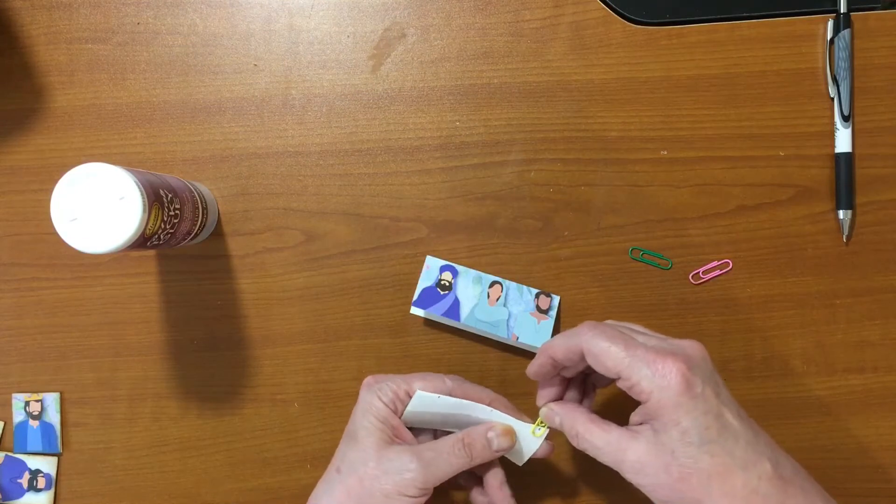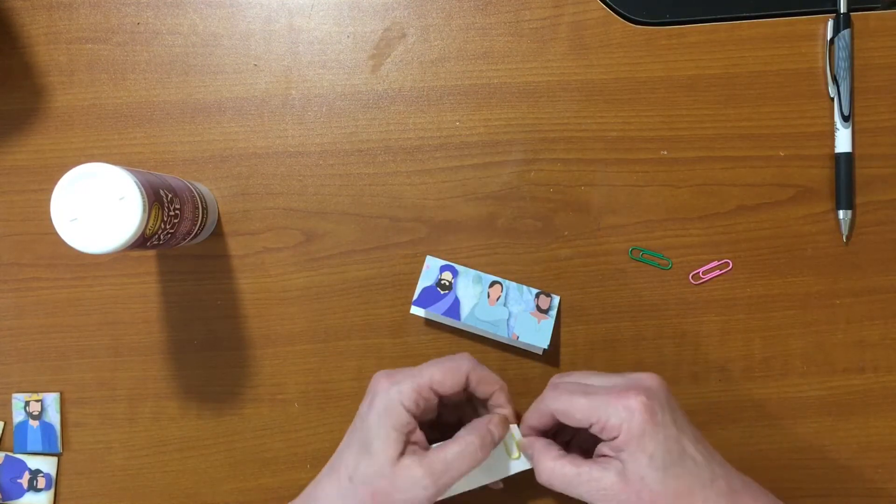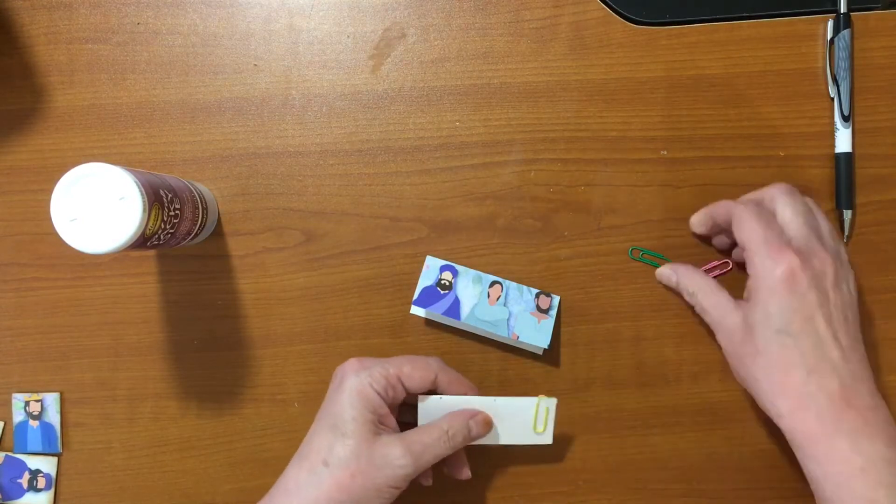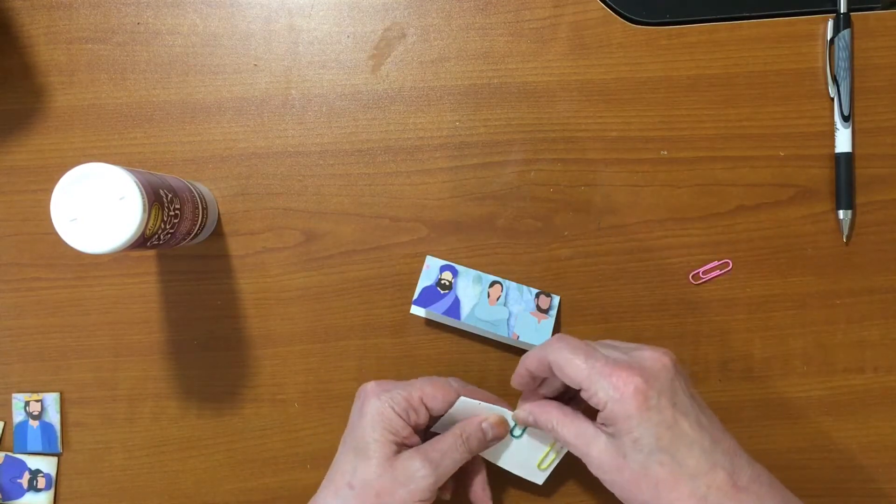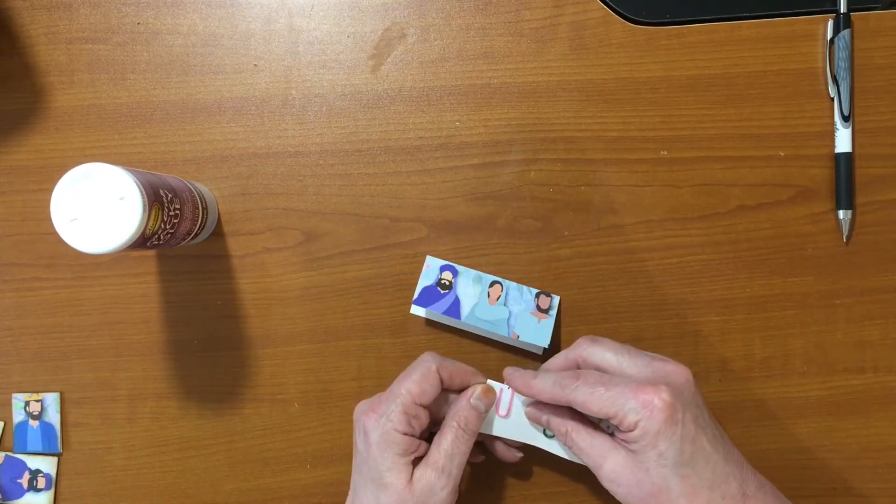Then I put the paper clips on top. This one was a little close to the edge so I move it over a touch. These are hidden paper clips, so you're not going to see the colors, so I don't really care what's on there.